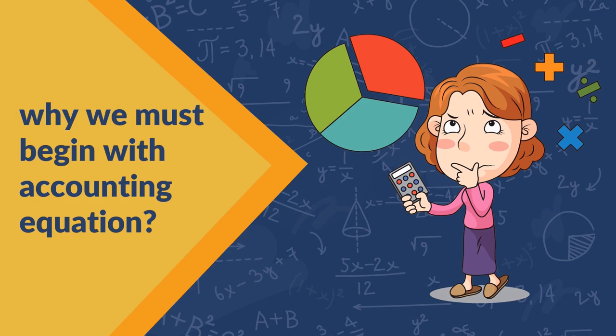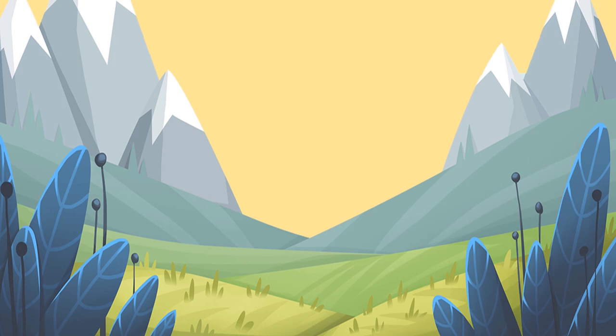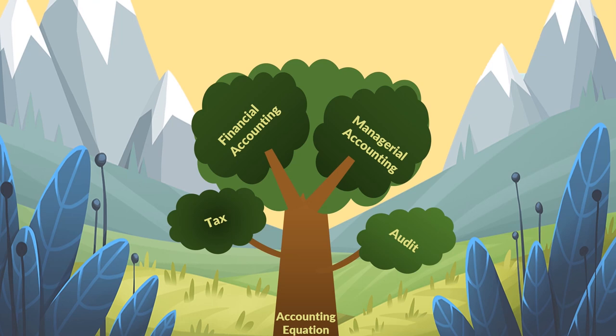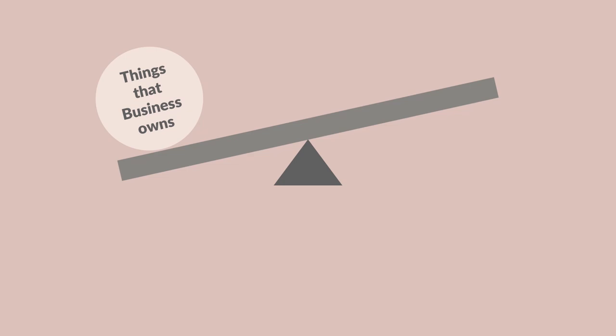So why must we begin with the accounting equation? Great question, right? Imagine accounting is like a tree and it's been there for ages. It has different branches — financial accounting, audit, and taxes. The accounting equation is like the root of that tree, and it's exactly the foundation of the double-entry accounting system. The key principle behind the accounting equation is that the things that the business owns is always equal to the things the business owes.